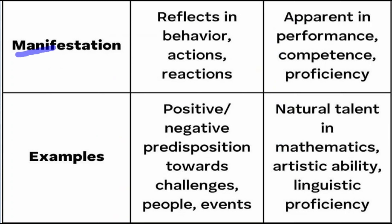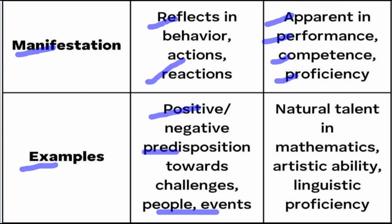What is the manifestation of this? The difference between behaviour, action, and reaction. The difference between performance, competence, and proficiency. The difference between positive and negative — three different positions towards challenges, people, and events. Natural talent in mathematics, artistic ability, and linguistic proficiency are examples of aptitude.